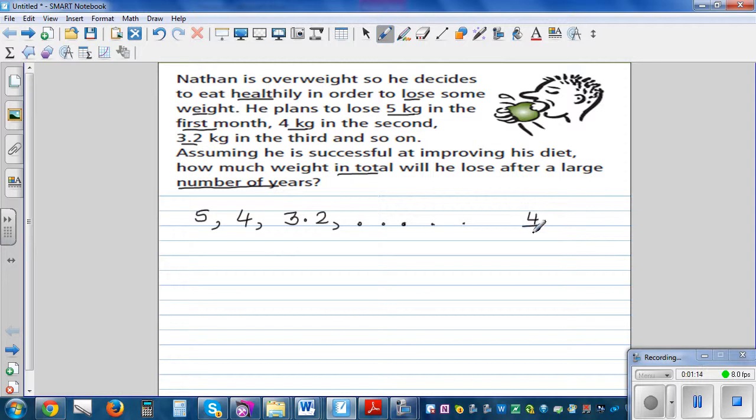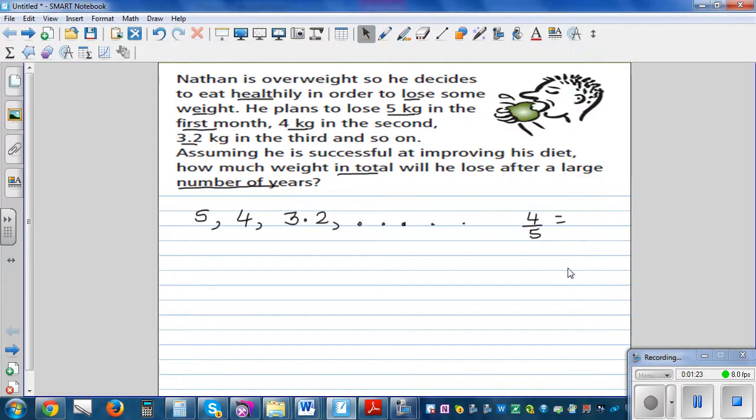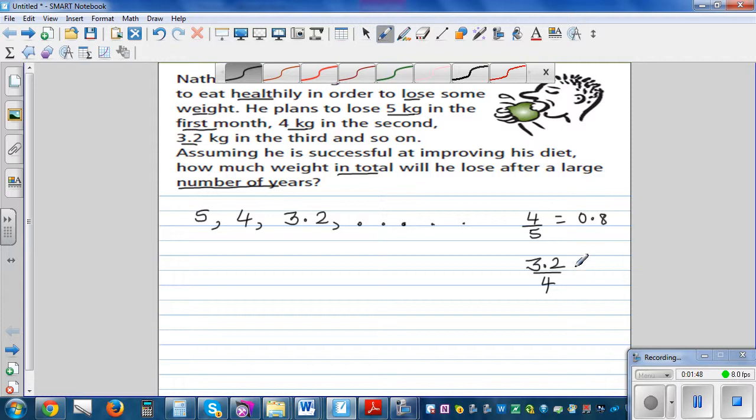Let's do 4 divided by 5 on a calculator. So 4 divided by 5 equals 0.8. To confirm whether it has the same ratio, let's do 3.2 divided by 4, which is 0.8. So this is decreasing in the same ratio.